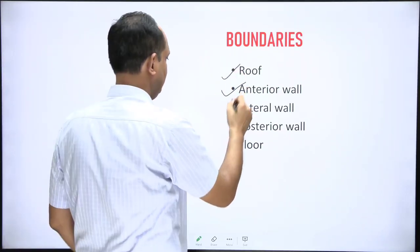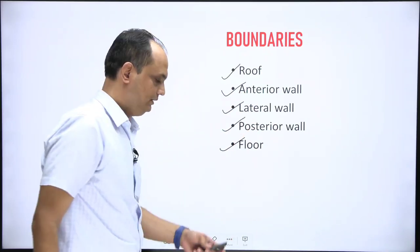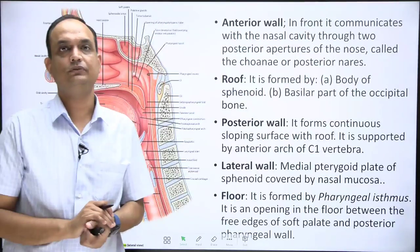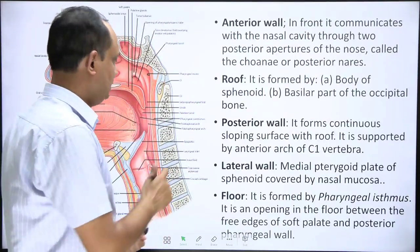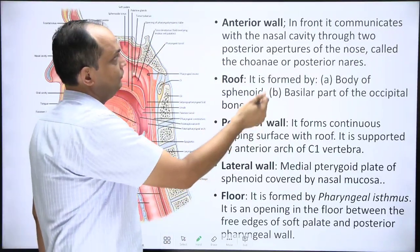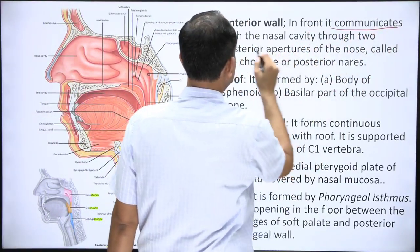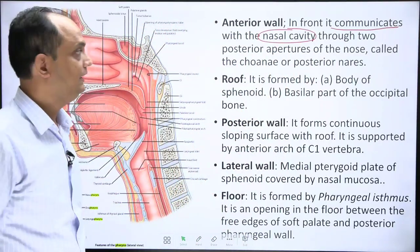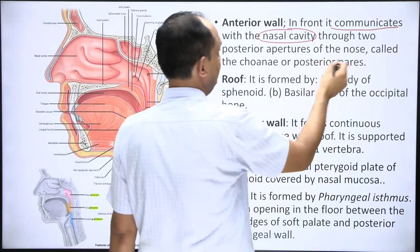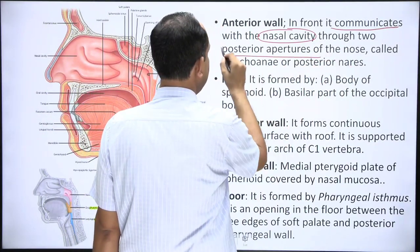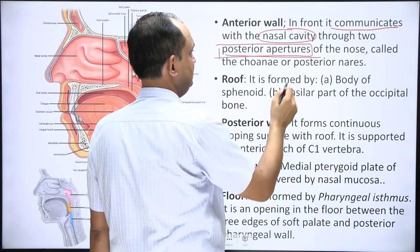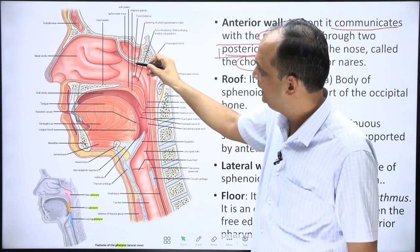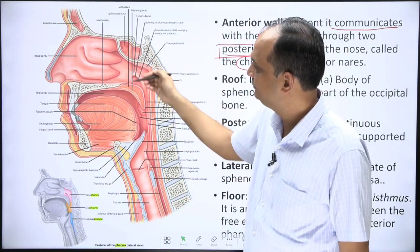The nasopharynx has a roof, anterior wall, lateral wall, posterior wall, and floor. Starting with the anterior wall: it has a communication with the nasal cavity. The opening through which the nasal cavity communicates with the nasopharynx is known as the posterior nasal aperture, also called the choana or posterior naris.